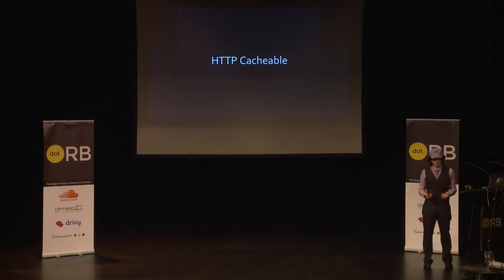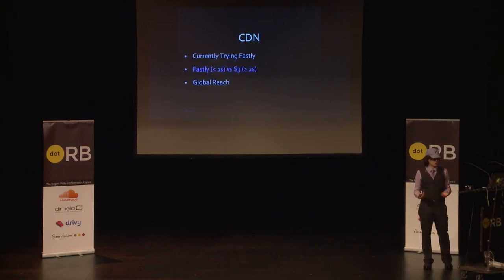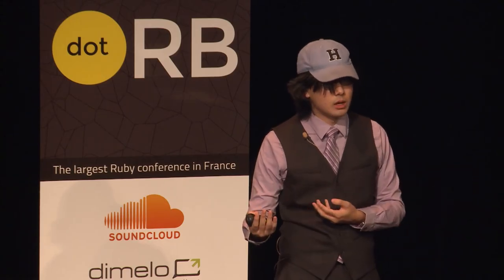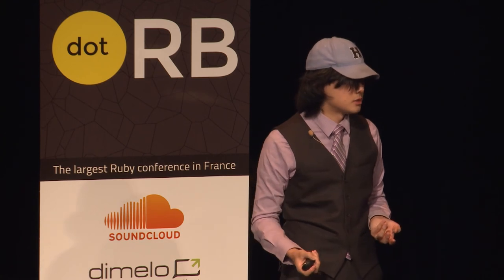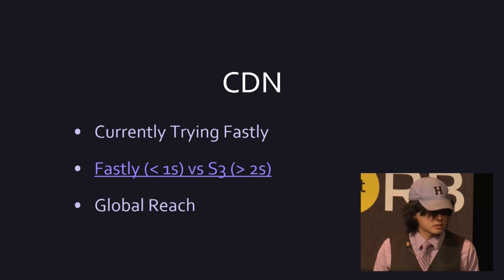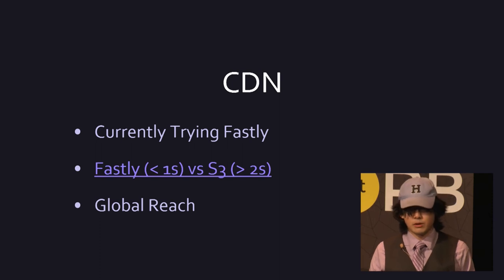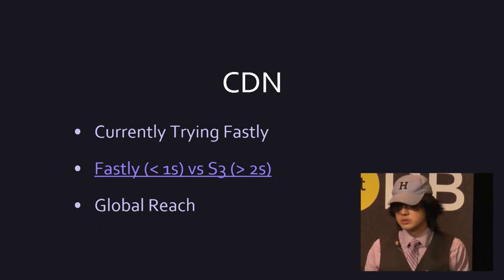We were really striving for something HTTP cacheable so we could scale it using a CDN. Larry has done work experimenting with Fastly on rubygems.org for serving static files. If the file is already cached on the Fastly server you're hitting, it takes on average less than a second. Versus S3/CloudFront where it's hosted now, which usually takes two to three seconds. We also get global reach with a CDN, so instead of hitting the API endpoint hosted in America, if you're in France you can hit something significantly closer.